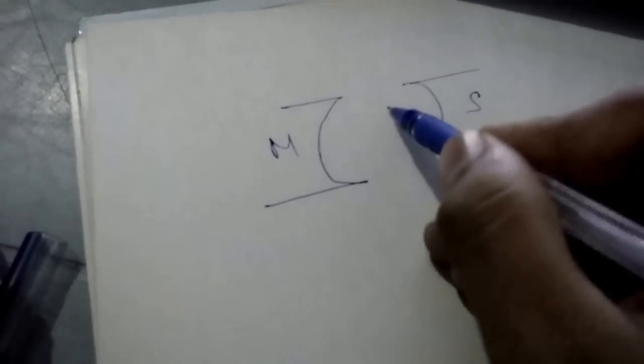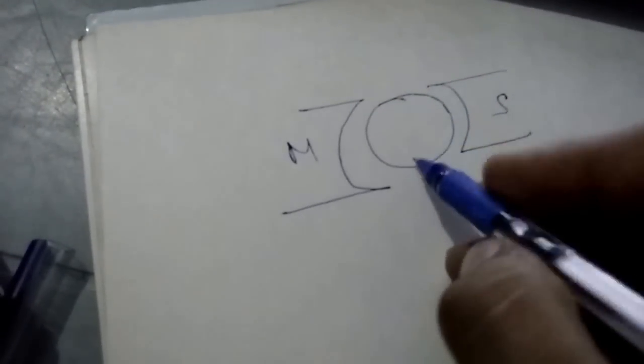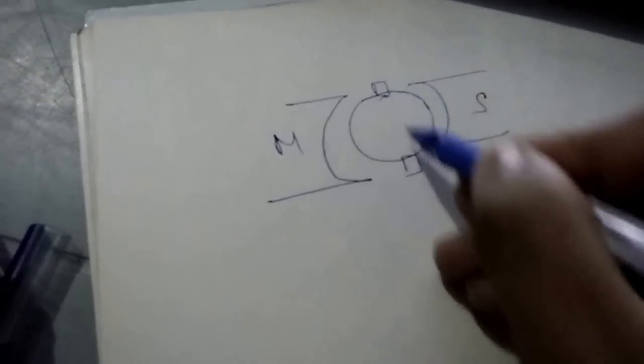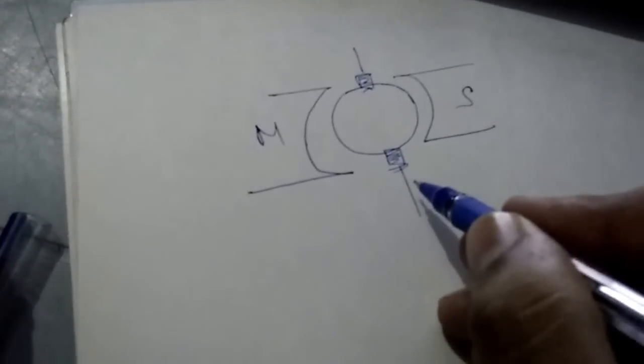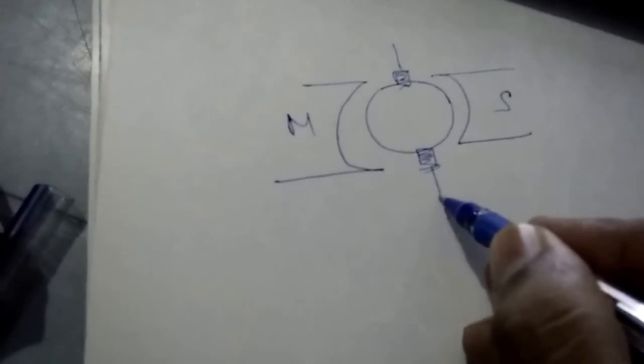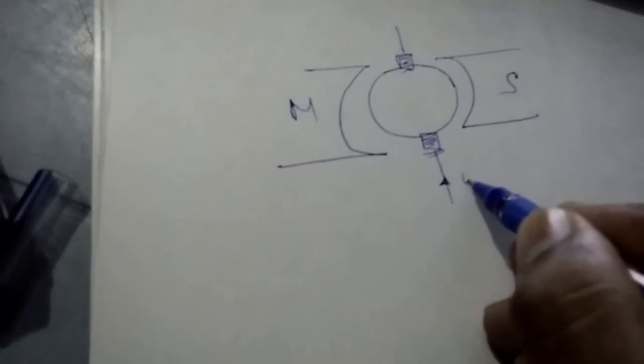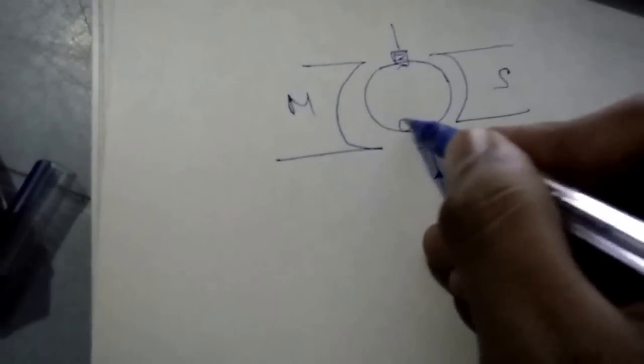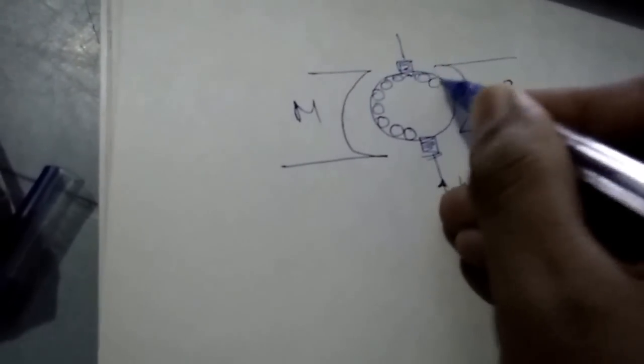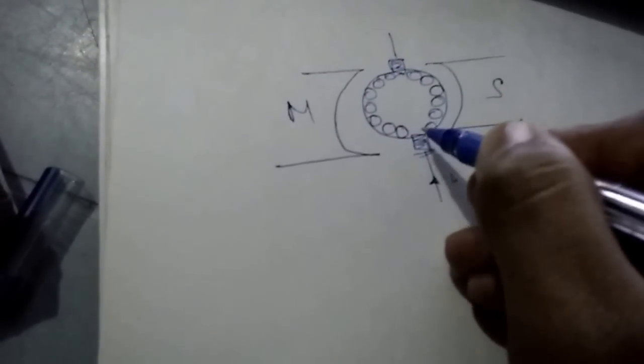Let us say this is our north pole and this is our south pole and here is our rotor. This is a brush. This is a very basic concept. Let us say here is a current entering into the motor and these are our rotor conductors.